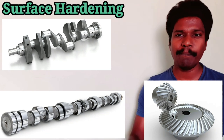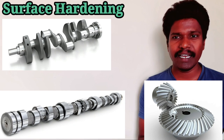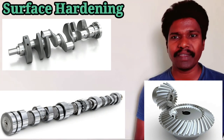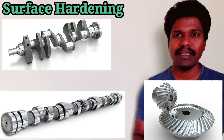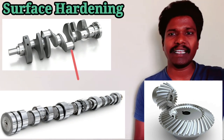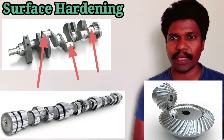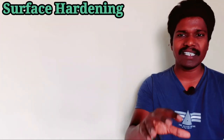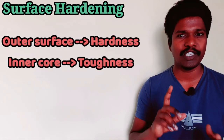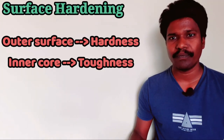These components are subjected to impact load and fatigue load. Impact load relates to material toughness. Gear teeth mesh together; crankshaft and bearings on connecting rods experience relative motion, requiring surface wear resistance.